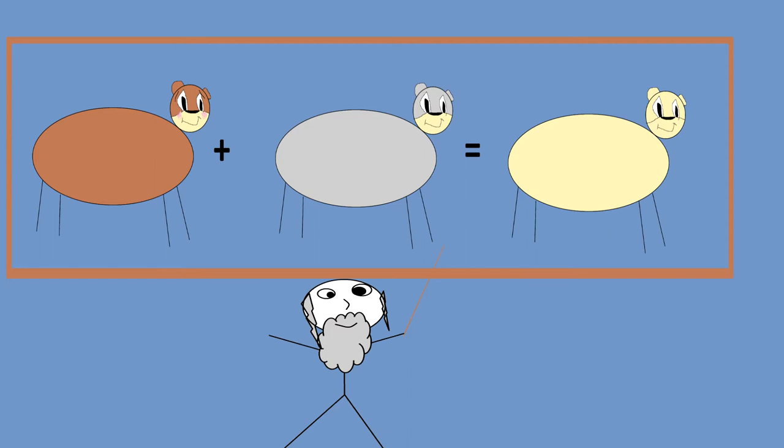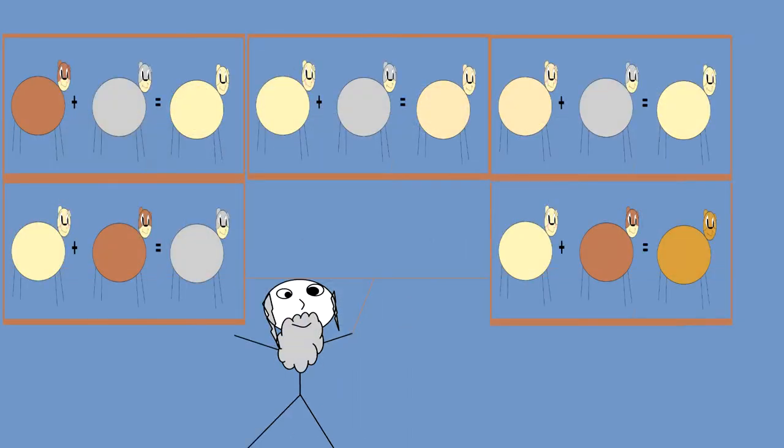Darwin constructed his natural selection based on the blending hypothesis as well. But if every gene keeps blending, the amount of options quickly start diminishing and gives natural selection less room to work with. This was one of the criticisms that Darwin had on his own theory.